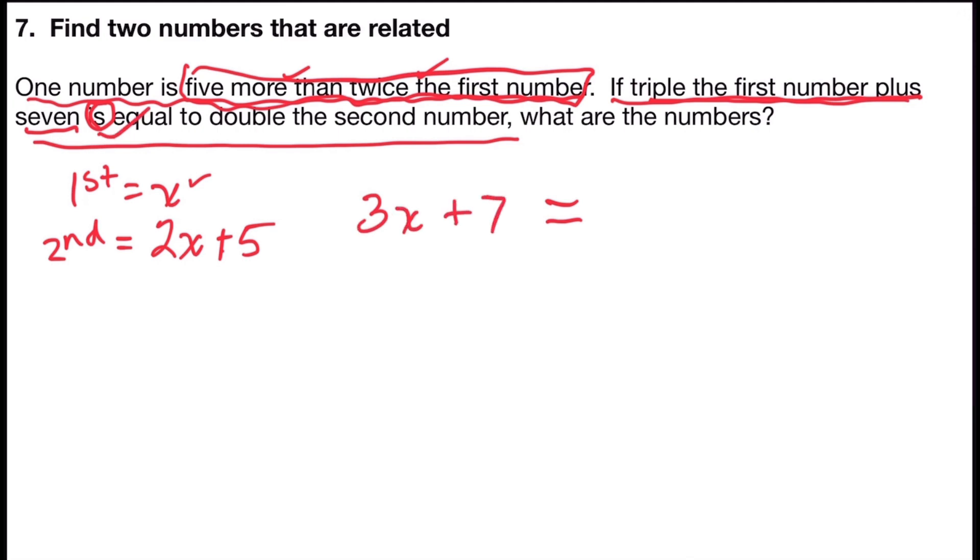Here's my equal sign. Double the second number - double means two times. Well, the second number is 2x plus five. So I want two times - I'm going to open up a set of parentheses because 2x plus five is an expression of the second number. So my equation would say 3x plus seven equals two times 2x plus five.